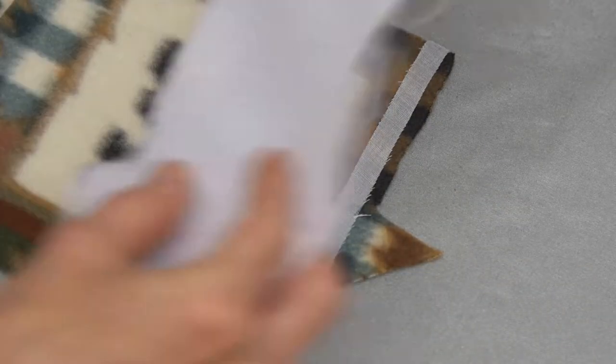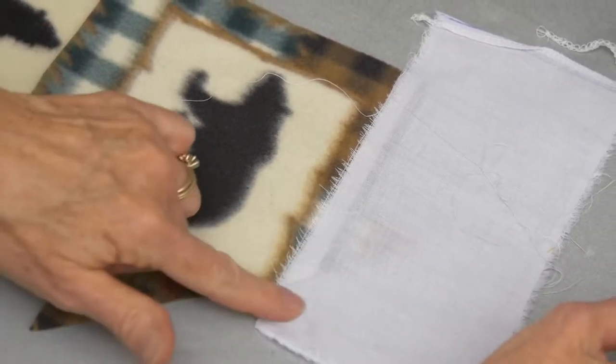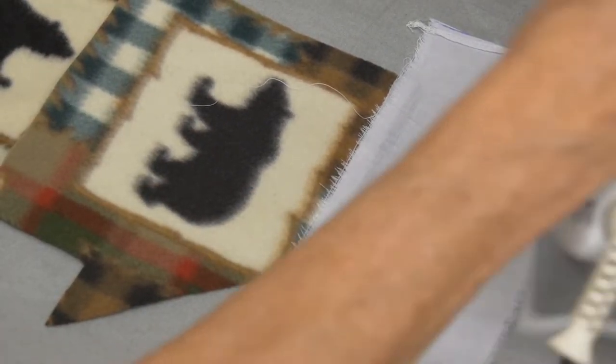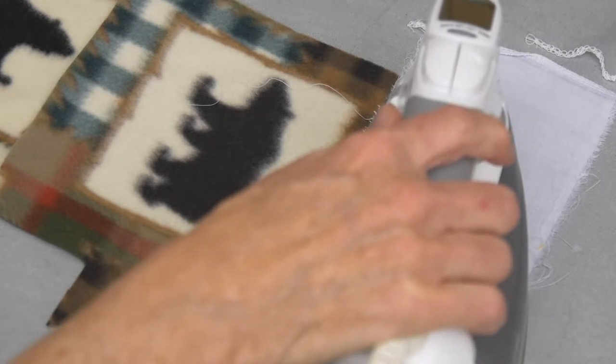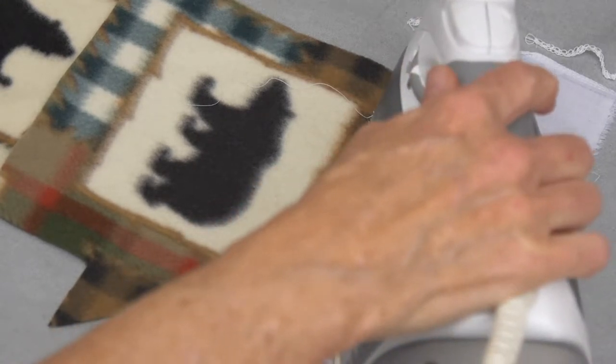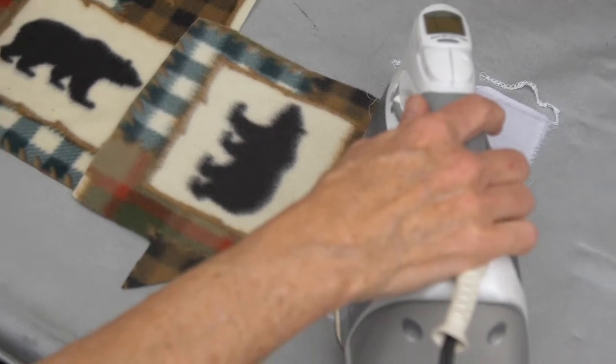And then it is fusible, so you are going to put your press cloth over the top of it and then you'll press and steam this. Notice that the iron sits just barely on the tape. You will not be pressing this project as you go because it is polyester, takes a lower heat, and it's a fleece.